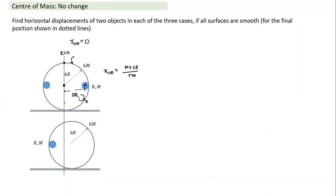When the inner sphere reaches the bottom, it has velocity directed to the left. The outer sphere at all instances has only horizontal velocity since the x-coordinate of the center of mass remains constant. At the lowest point, both have horizontal velocities in opposite directions. Because there is no friction, conservation of mechanical energy holds and the system continues to the upper extreme.